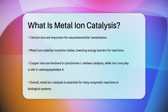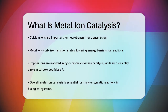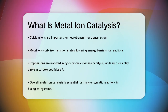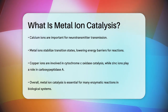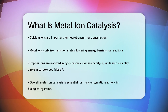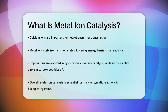Metal ions like copper and zinc are particularly common in these catalytic processes. Copper ions are involved in reactions such as the catalysis of cytochrome C oxidase, while zinc ions are crucial in enzymes like carboxypeptidase A.